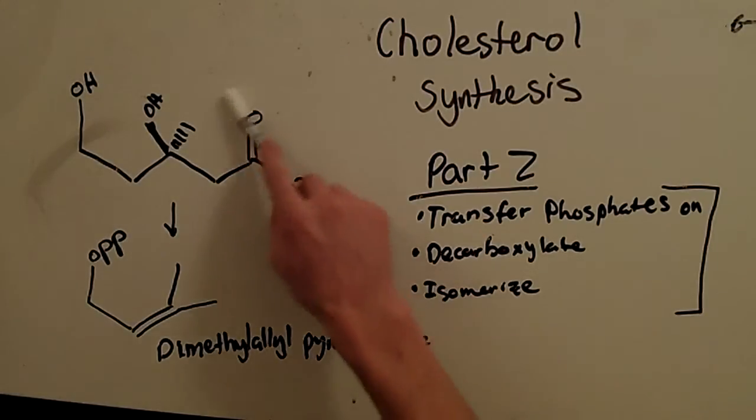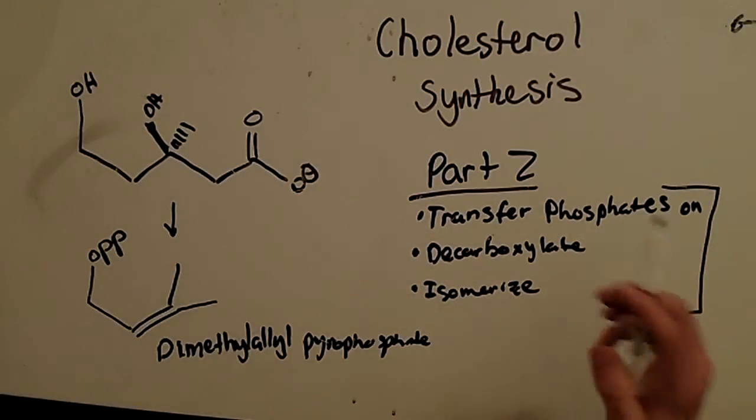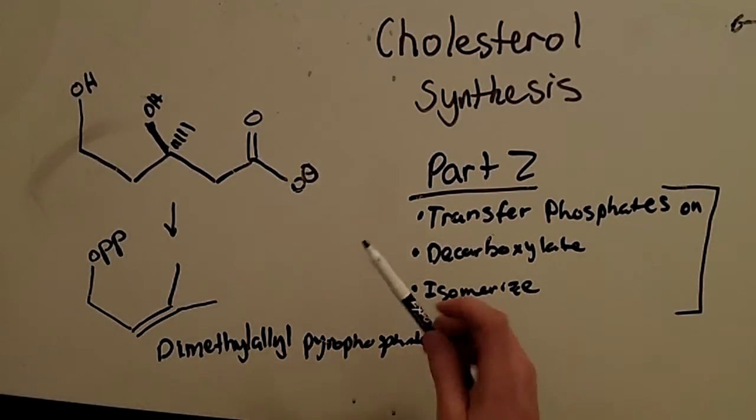Second, you decarboxylate here, and there should be a negative charge there. And lastly, you isomerize that compound to finally arrive at dimethyl allyl pyrophosphate.